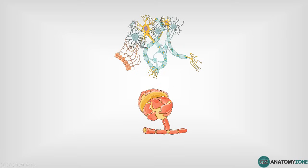The word glial actually comes from the Greek meaning glue. When they were first discovered, it was thought that the glial cells actually acted as a connective substance within the nervous system, holding it all together. Glial cells are not directly involved in information processing but they are essential in providing support to the neurons.